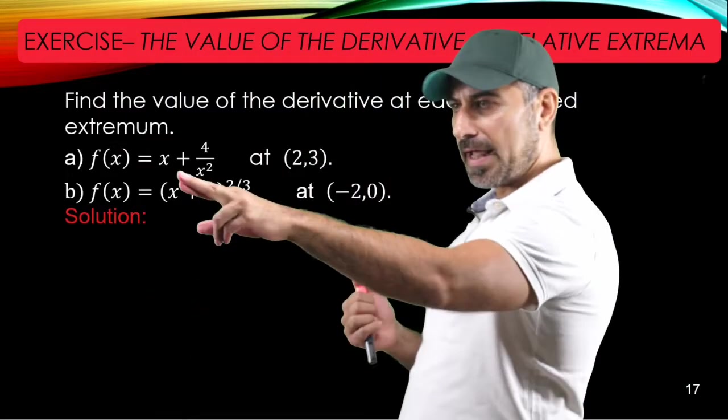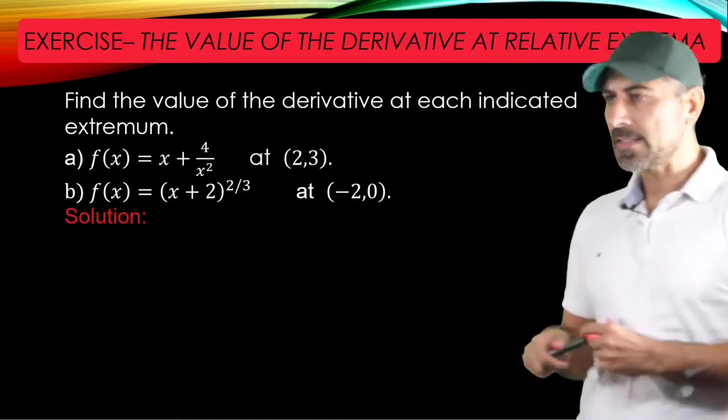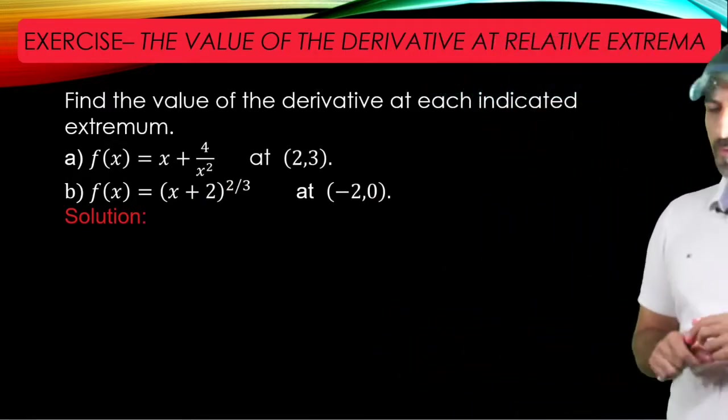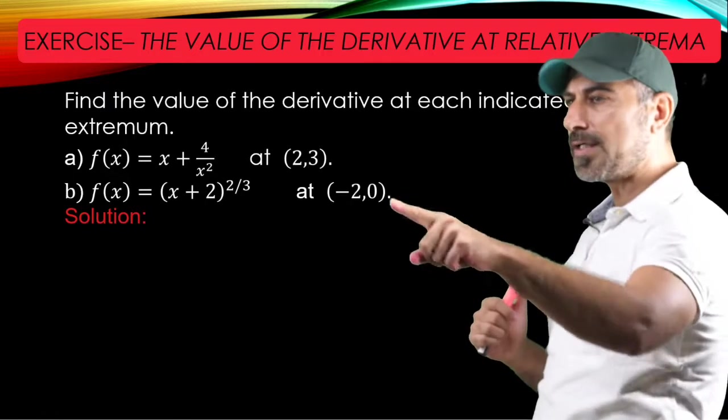So the functions are x plus 4 over x squared and x plus 2 to the power of 2 thirds, and the points are (2, 3) and (-2, 0).